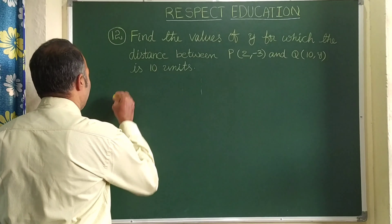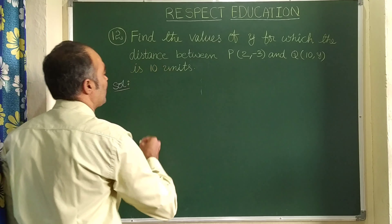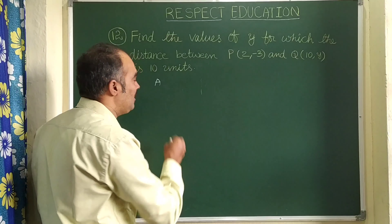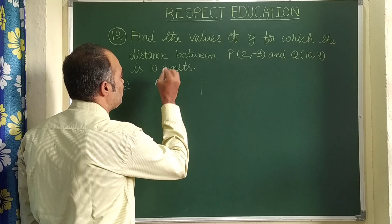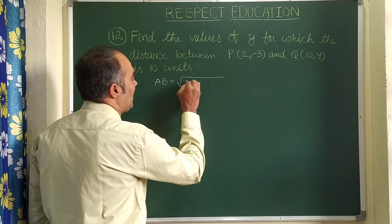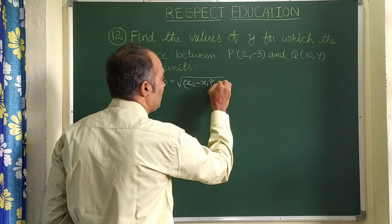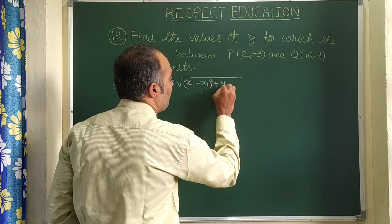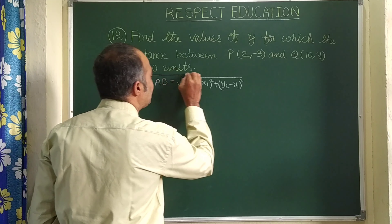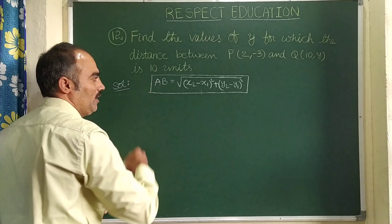Before starting this problem, let us write the distance formula. The distance between A(x1, y1) and B(x2, y2) is: AB = √[(x2 - x1)² + (y2 - y1)²]. This is the distance formula between the given two points.